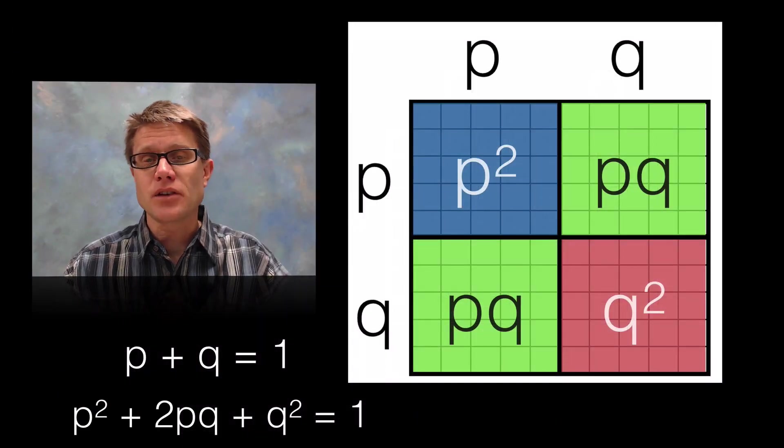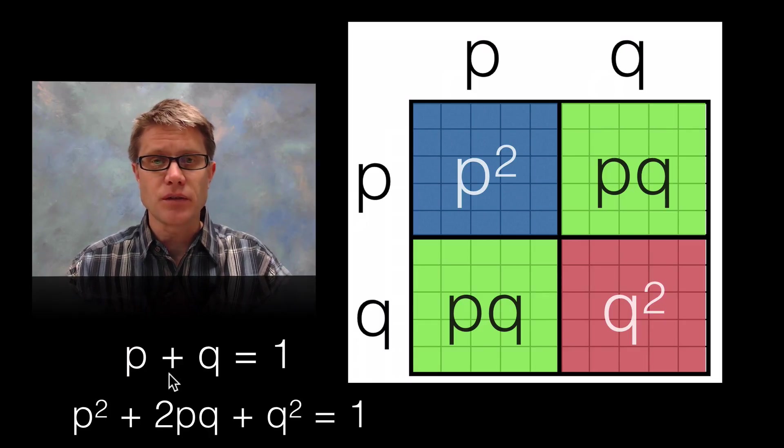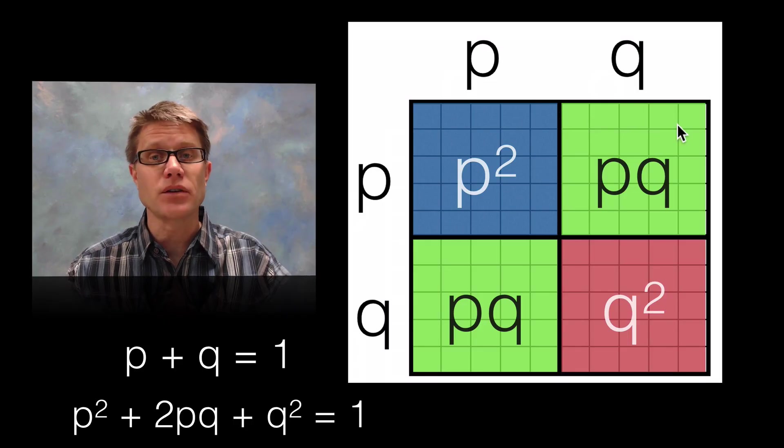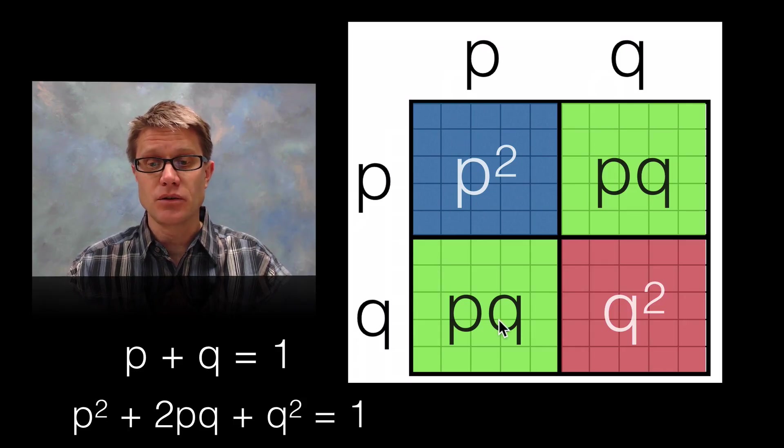So again that is our Hardy-Weinberg Punnett square. And you should start to understand really where this equation is coming from. Why does p plus q equal 1? Because the gene can either be a p or a q. In this case it would be 0.5 and 0.5. So that obviously has to add up to 1. And then where does this equation come from? Again it's those homozygous dominant, the two heterozygous and the homozygous recessive.